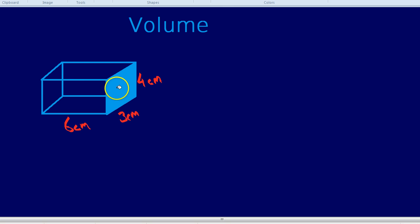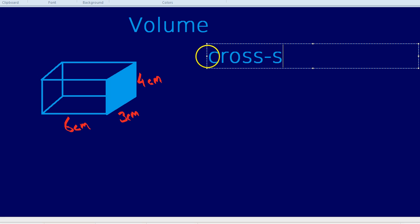Because you can see it goes all the way from the right to the left, all the way through the shape, so therefore it's a cross-section. Let's label that as a cross-section.